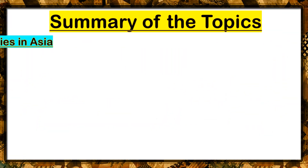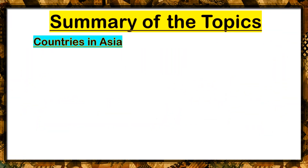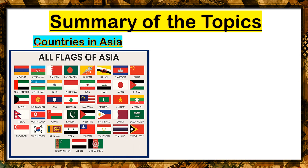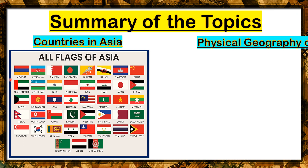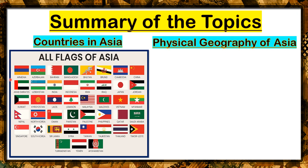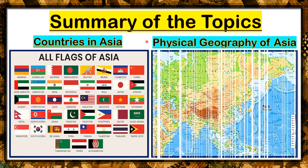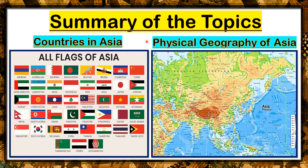For the summary of the topics we have discussed today: of course, we have discussed about countries in Asia — these are all flags of Asia with the names of their countries — and of course, the physical geography of Asia, or how Asia looks like physically.